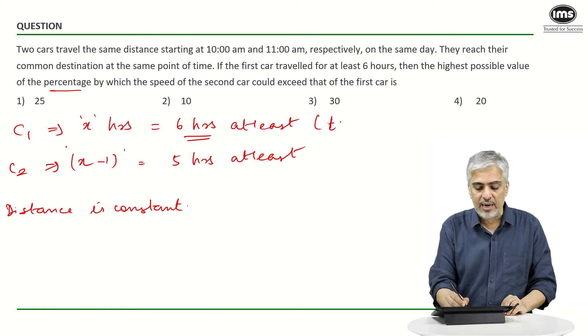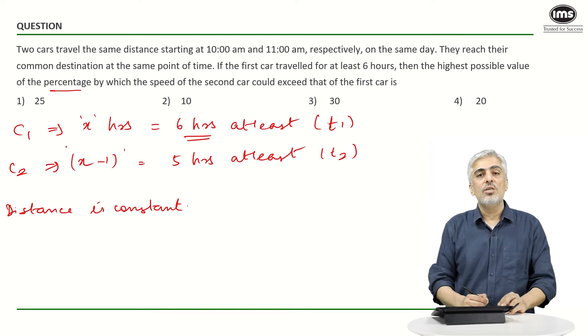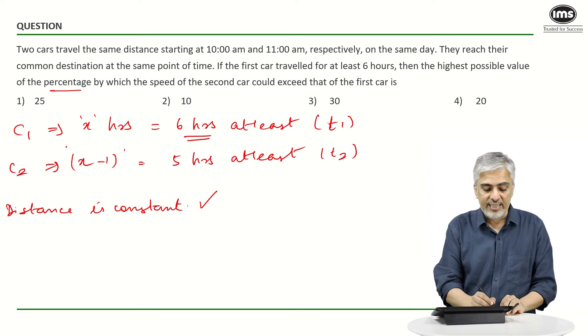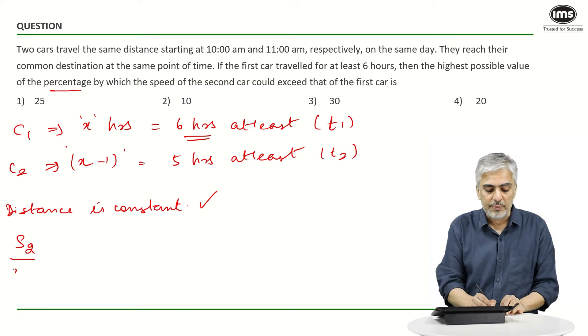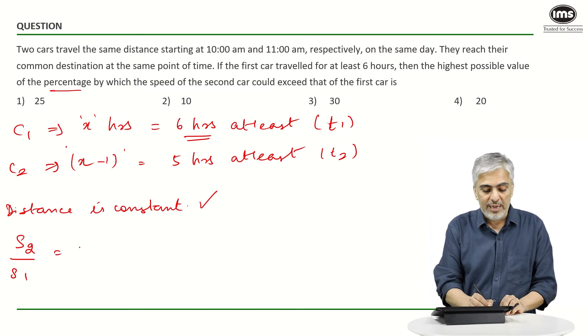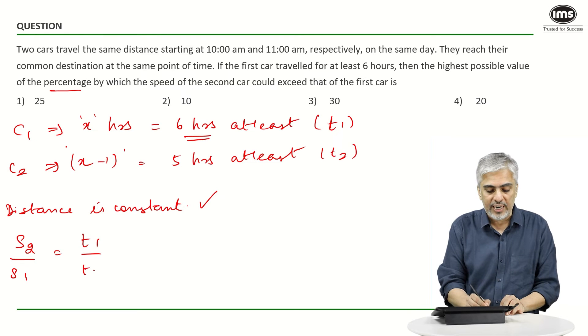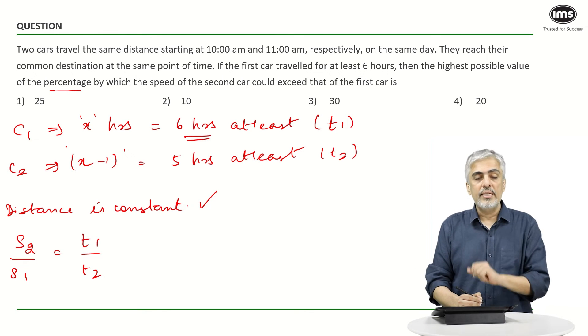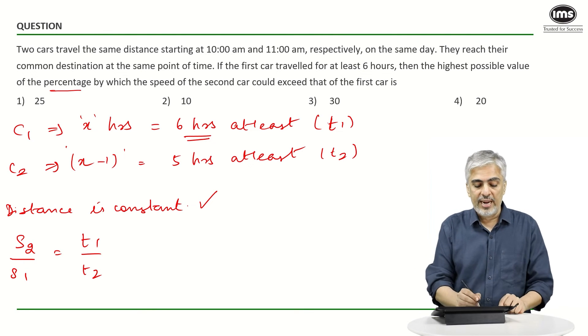Time taken by car one is six and time taken by car two is five. What do we know? When distance is constant, do we agree that speed of car two upon speed of car one will be equal to time of car one upon time of car two? Inversely proportional - speed and time when distance is constant.